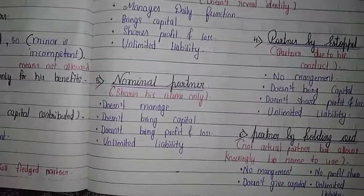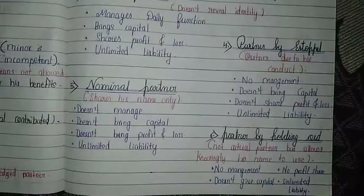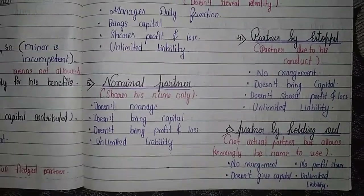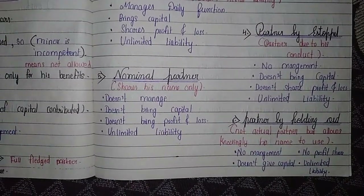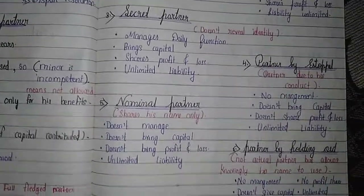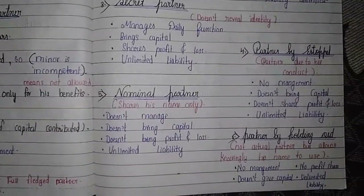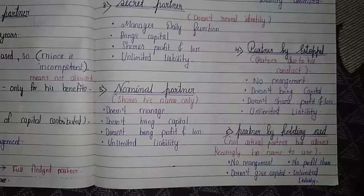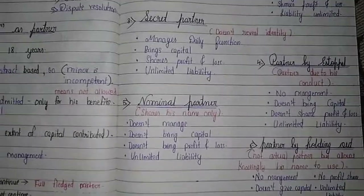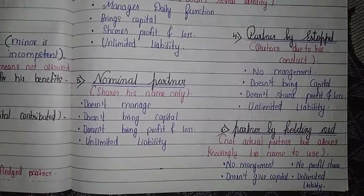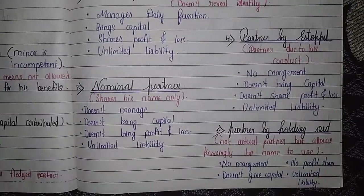A partner by estoppel is a partner due to his conduct. For example, if someone represents to a bank that a person is a trustworthy partner and the bank grants a loan based on that representation, that person becomes a partner by estoppel. He does not participate in management, bring capital, or share profit and loss, but his liability is unlimited because the bank relied on his conduct to grant the loan.